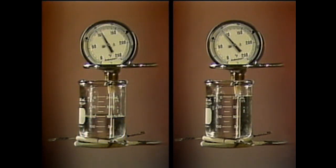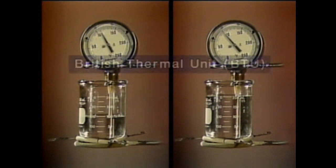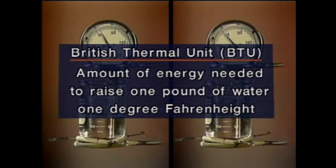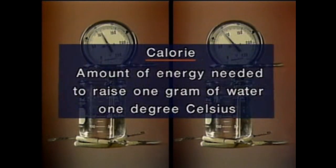The two units generally used to measure heat are the British Thermal Unit, or BTU, and the calorie. A BTU is the amount of energy needed to raise the temperature of one pound of water one degree Fahrenheit. A calorie is the amount of energy needed to raise the temperature of one gram of water one degree Celsius.